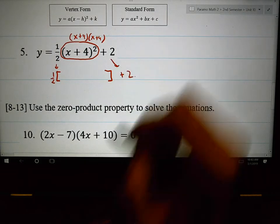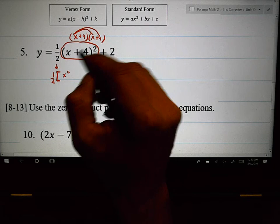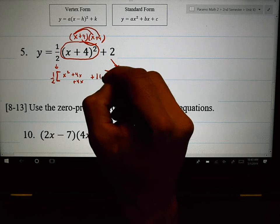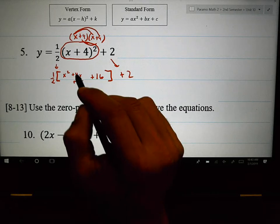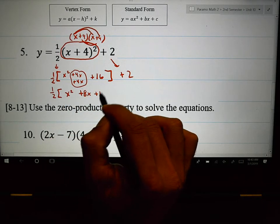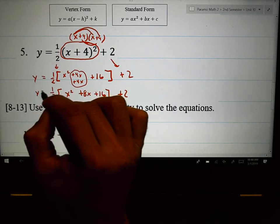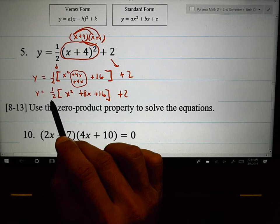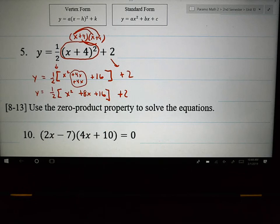I'll put the plus 2 behind it. But x plus 4 times x plus 4, I go x times x. x times 4 plus 4x plus another 4x plus the 16. These two little pieces simplify. So I'm going to leave this 1 half. x squared plus 8x plus 16. And there's still that plus 2 outside. That's step 1. Step 1 is distribute.